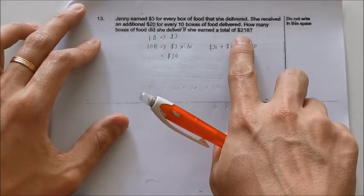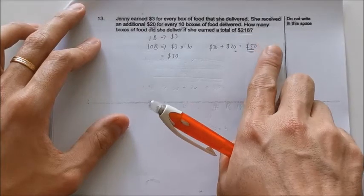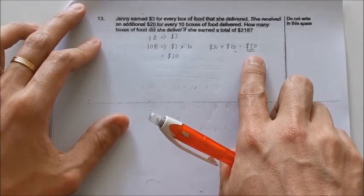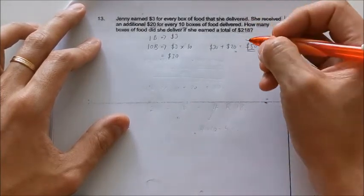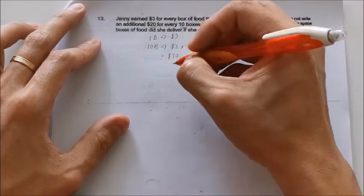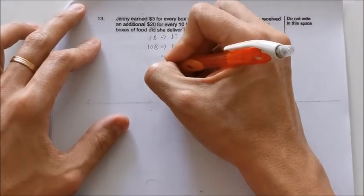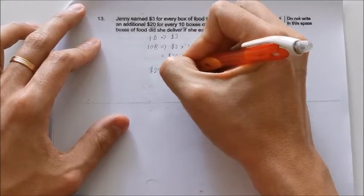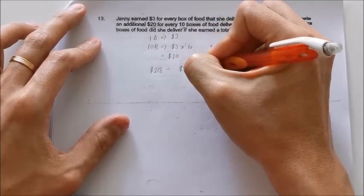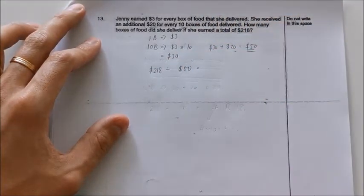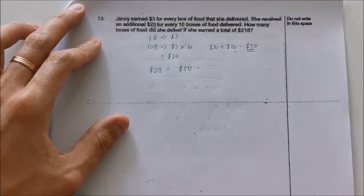So now what we need to do is for this $218, we need to find out how many $50s are there. So what we need to do is take $218 divided by $50 and find out how many $50s are there and what is the remainder.